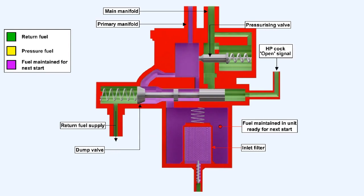When the high-pressure fuel cock is opened, a signal of fuel pressure is sent to the dump valve, which moves over and shuts off the fuel flow back to the supply line. In moving over, the valve also opens the passageway to the primary manifold. Fuel pressure from the fuel control unit will open the inlet check valve and pass through the filter to the primary fuel manifold.